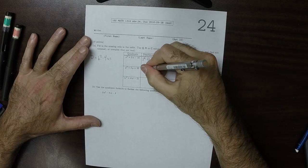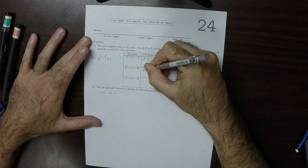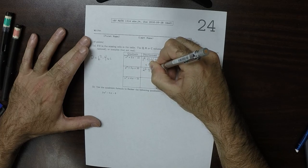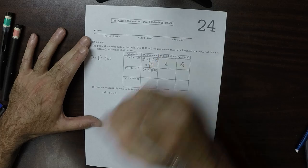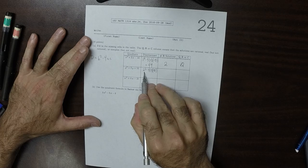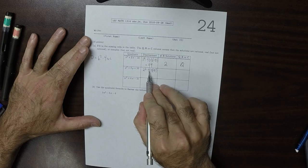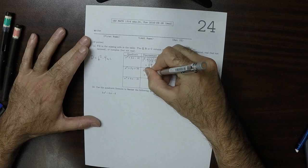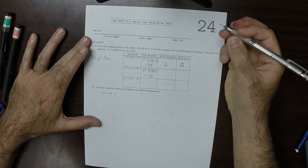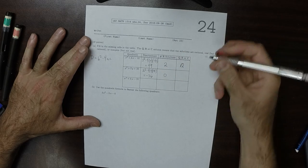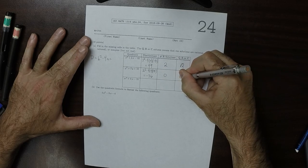This would be 2 squared minus 4 times 1 times 10, positive 10 on this one. So that would be 4 minus 40, so that would be negative 36. That means that the number of real solutions is 0, and all of the solutions must be complex.